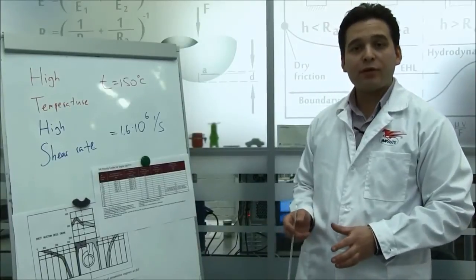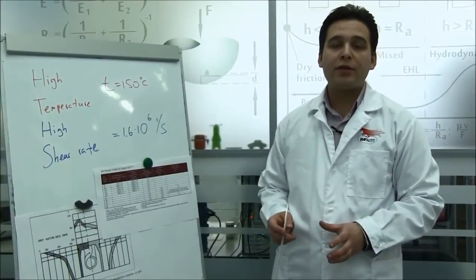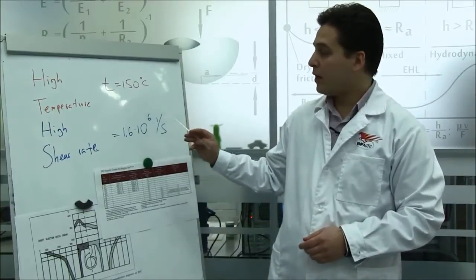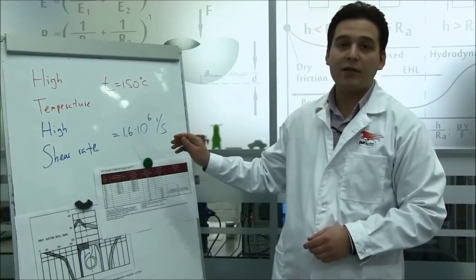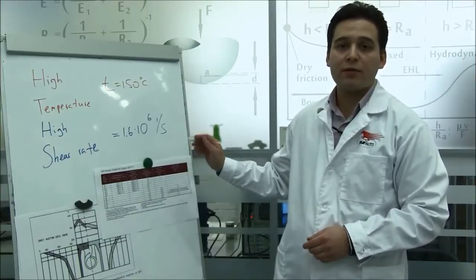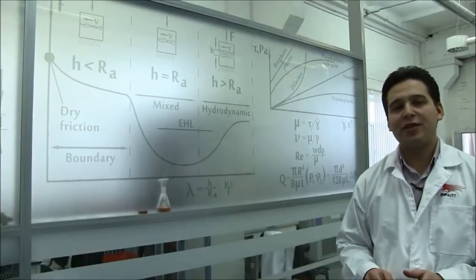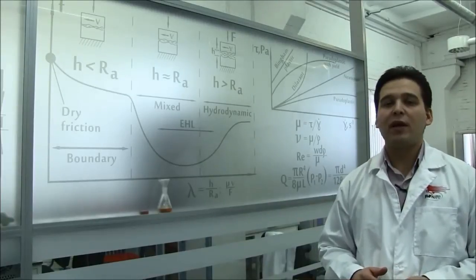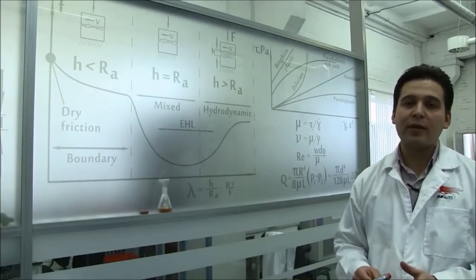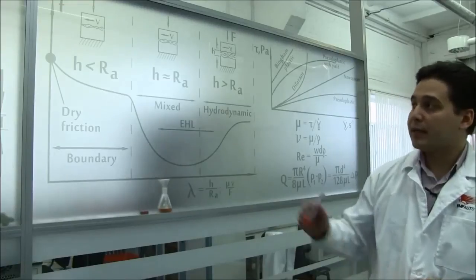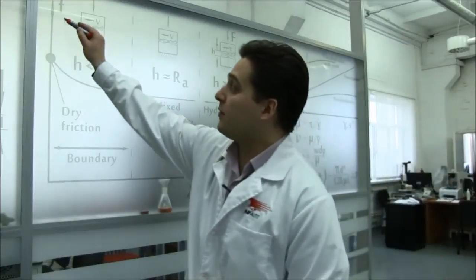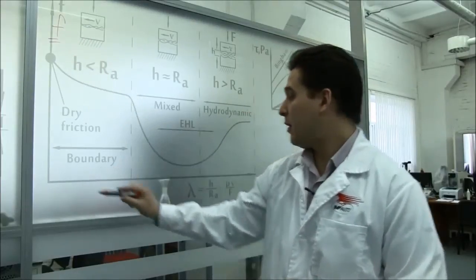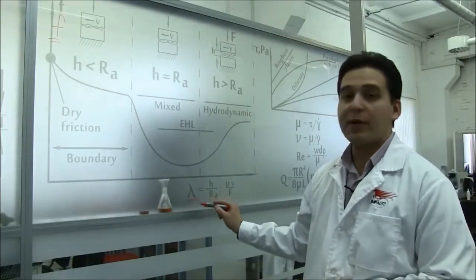According to the SAE standard, HTHS viscosity should be measured under 150 degrees and the shear rate 1.6 multiplied by 10 to the power of 6 reverse seconds. It is very important that HTHS viscosity is stable during the entire service interval. Let me demonstrate it to you on the Stribeck diagram, where you can see the dependence of the friction coefficient on the thickness of the oil layer that is directly proportional to the HTHS viscosity.